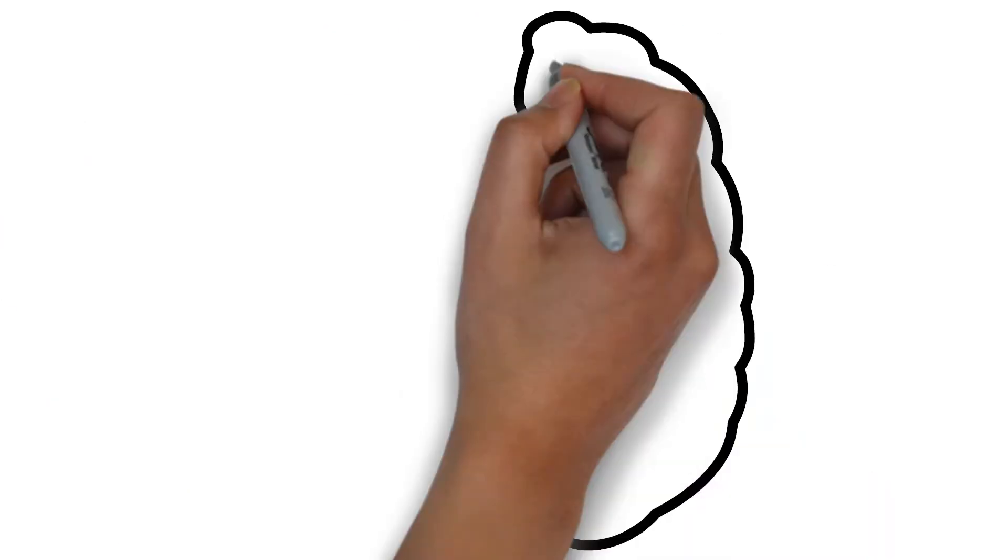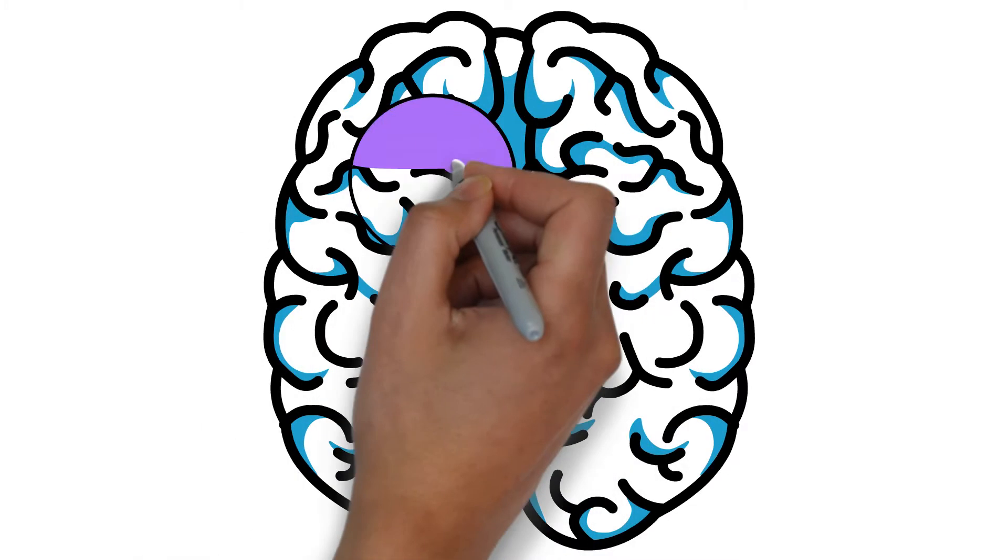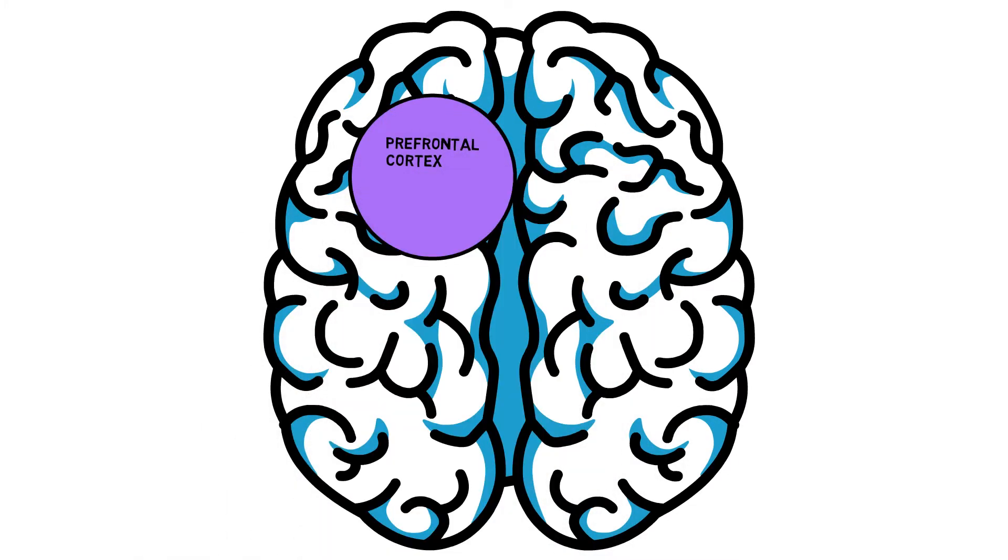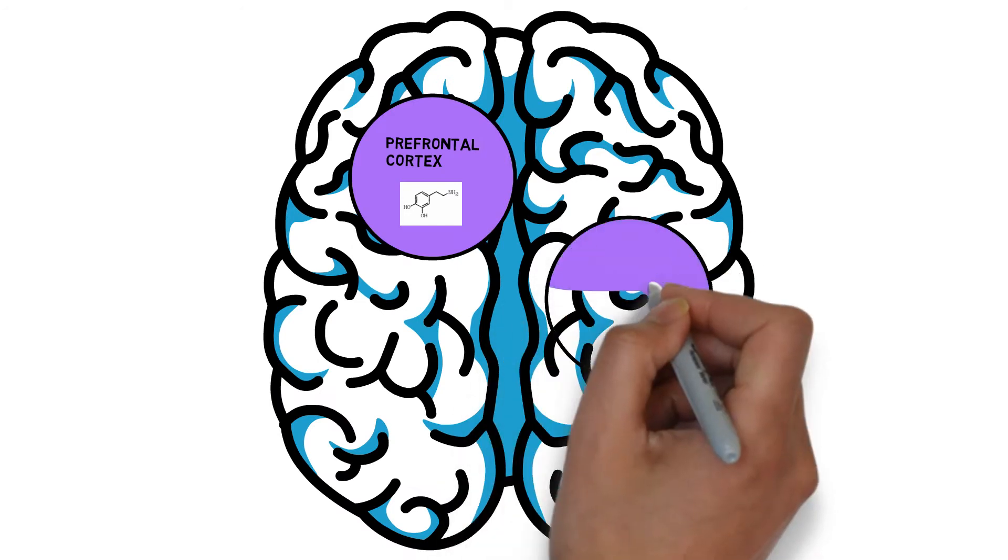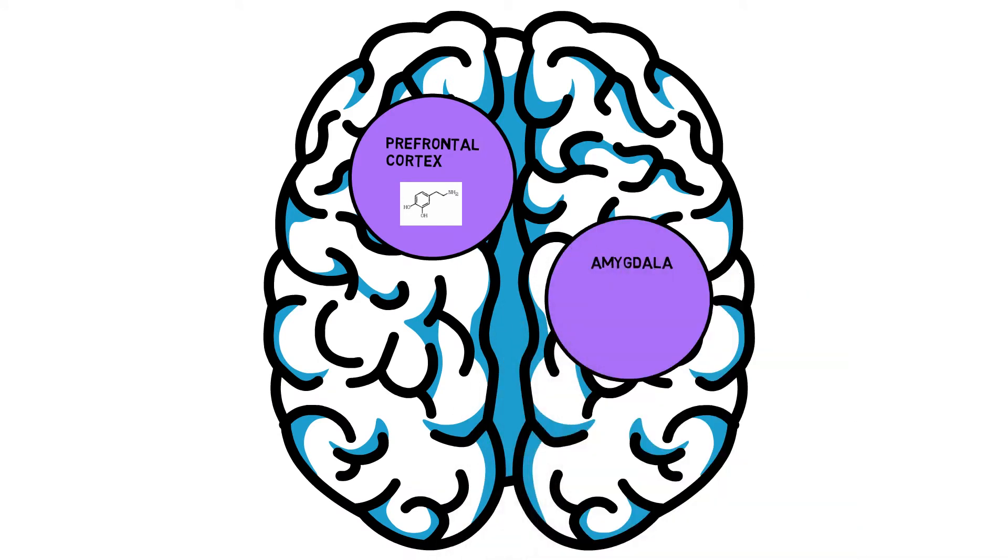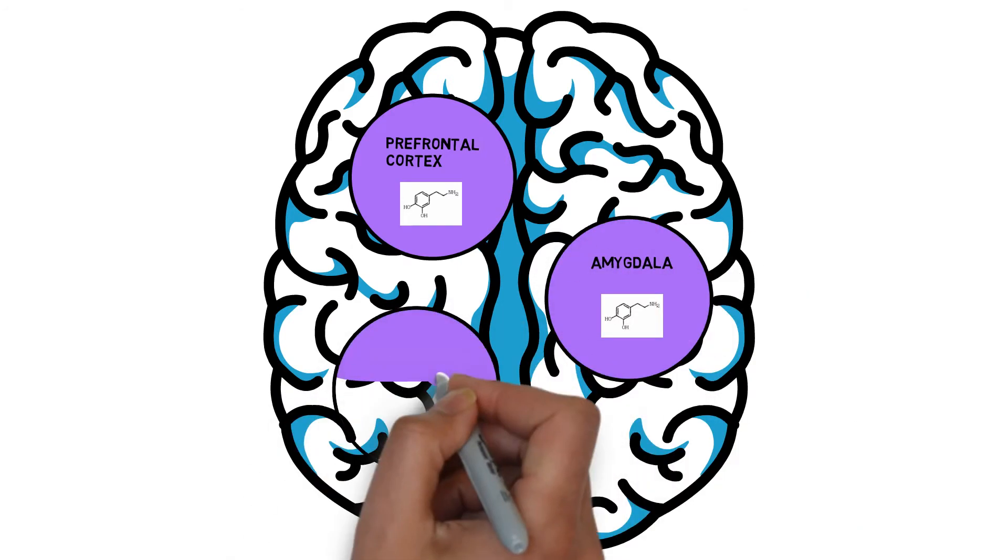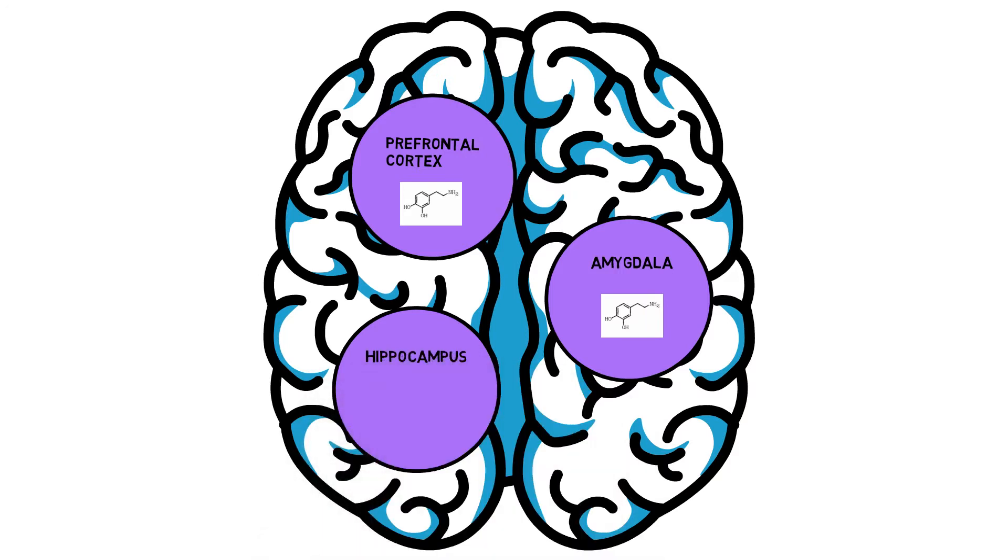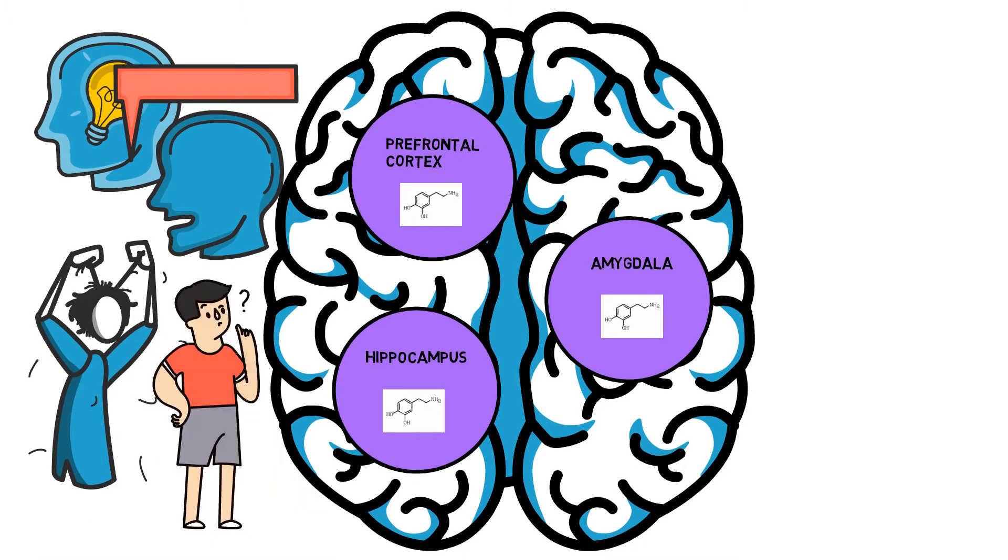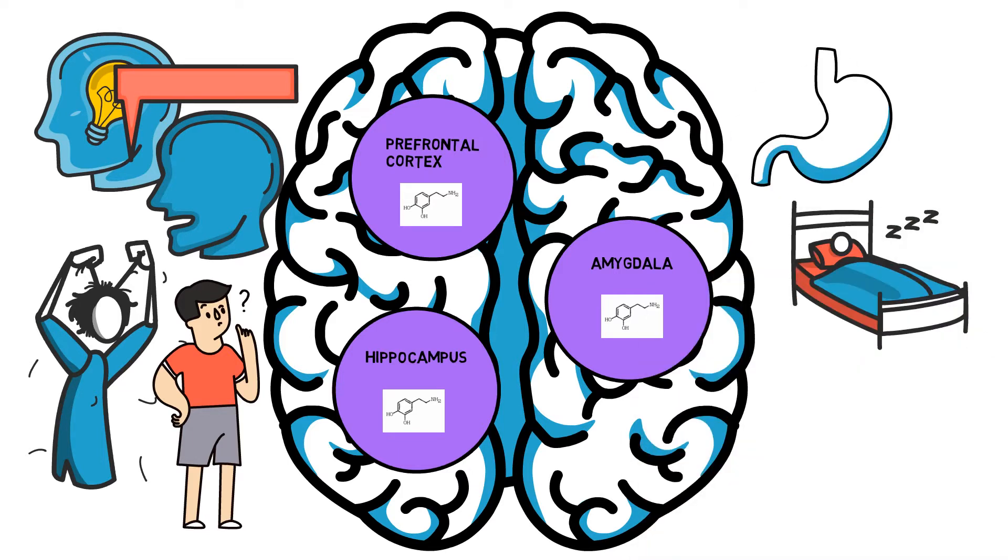Along with other neurotransmitters in the brain, dopamine is working in many important areas such as the prefrontal cortex, amygdala, and hippocampus. These areas are responsible for crucial functions for the human body, such as intelligence, language, emotion control, and memory. Also, dopamine is involved in other body functionalities like digestion, sleep, and stress control.